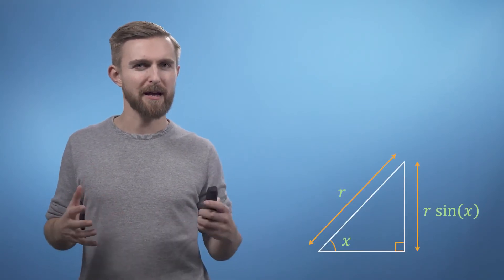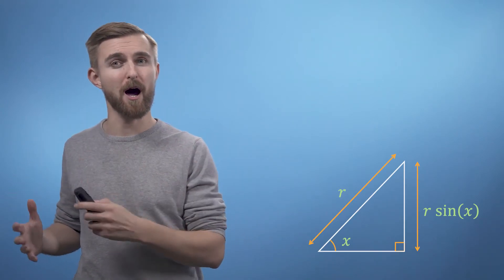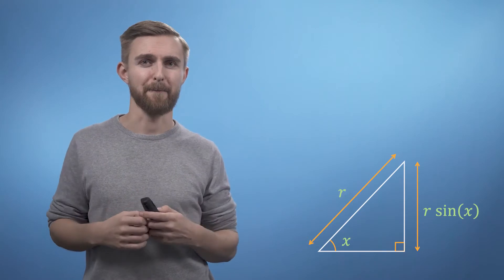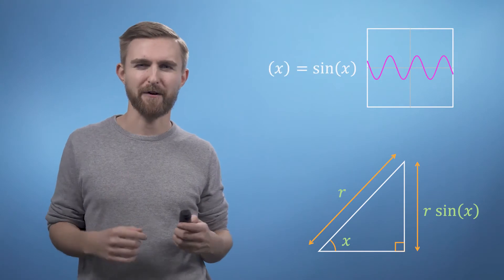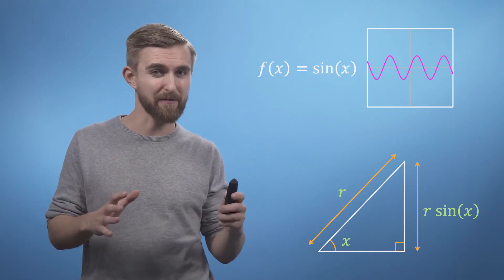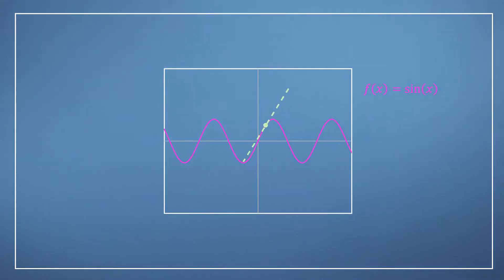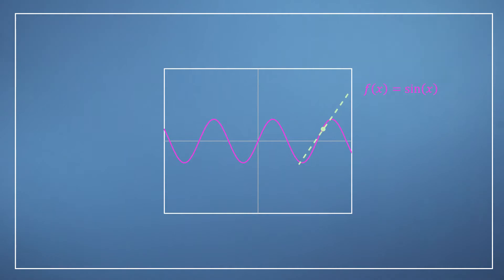The last special case functions we're going to talk about are the trigonometric functions, sine and cosine. You may recall that for a right angle triangle, sine of angle x multiplied by the hypotenuse r gives you the length of the opposite side to the angle. The graph of sine x looks like this. Sine x starts with a positive gradient, which gently decreases until it's zero at the top of the bump, and then it starts being negative again until it gets to the bottom of the next bump.